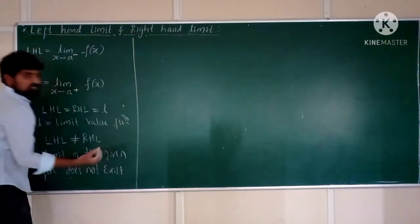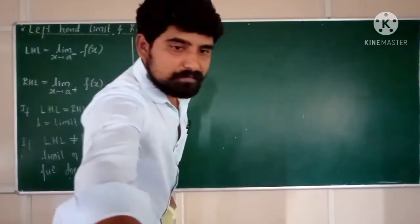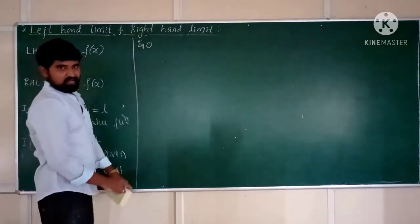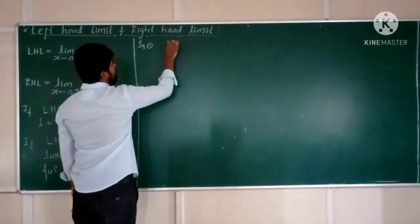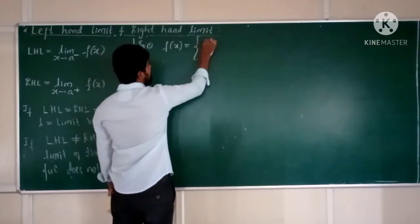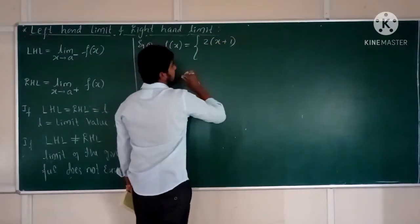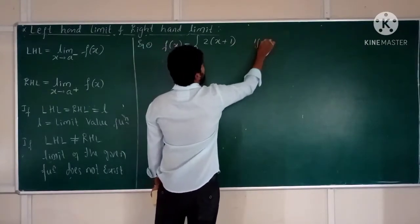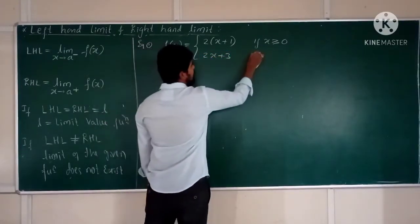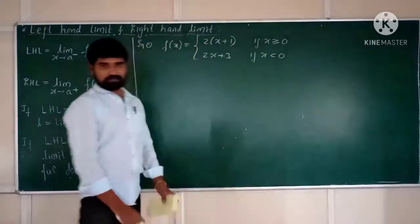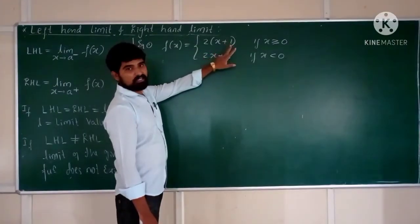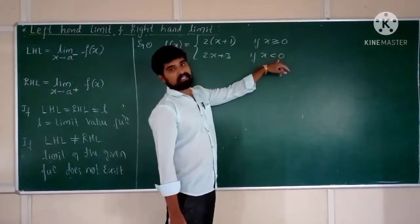Let us consider some examples. Evaluate F(x) = 2(x+1) if x is greater than or equal to 0, and F(x) = 2x+3 if x is less than 0. The function F(x) is defined in two manners: for x ≥ 0 and for x < 0.